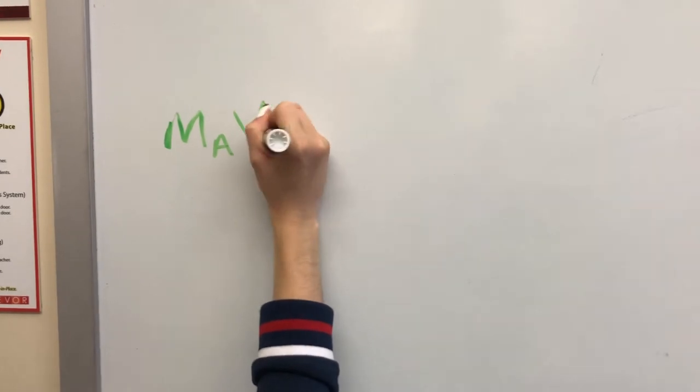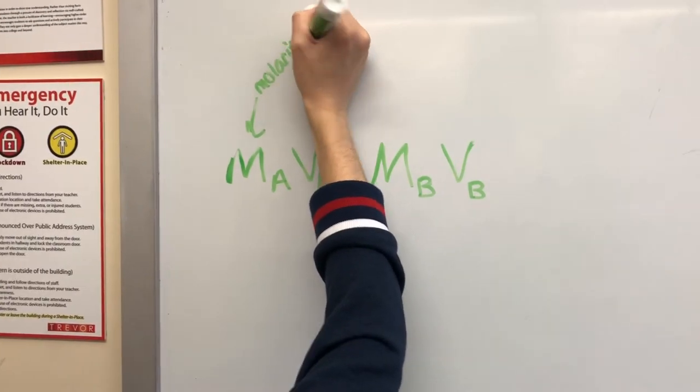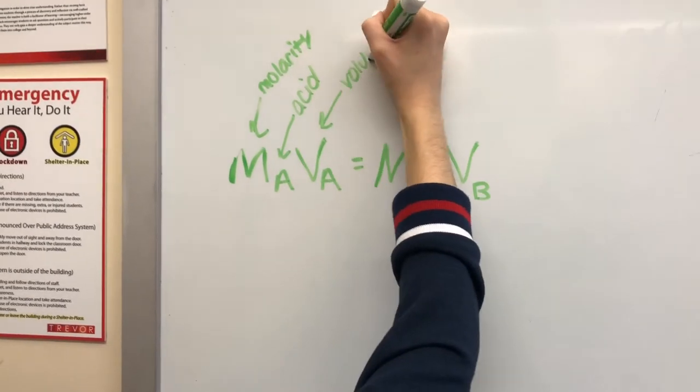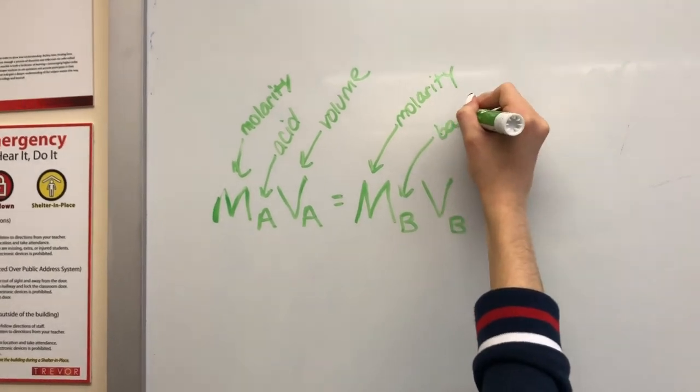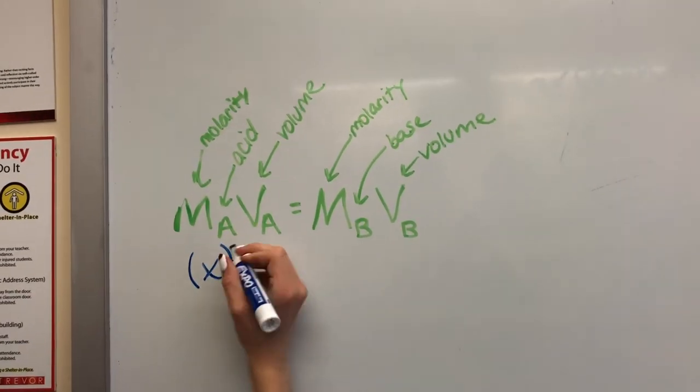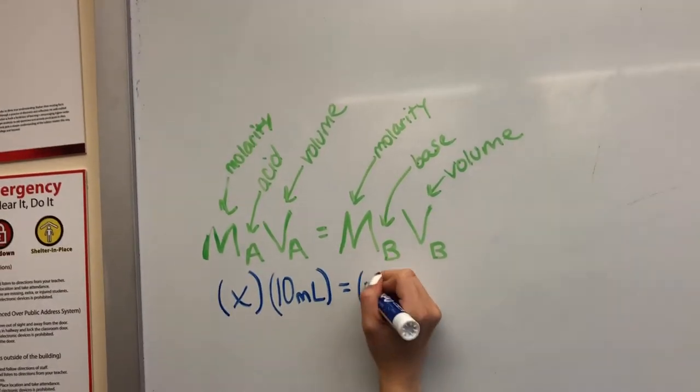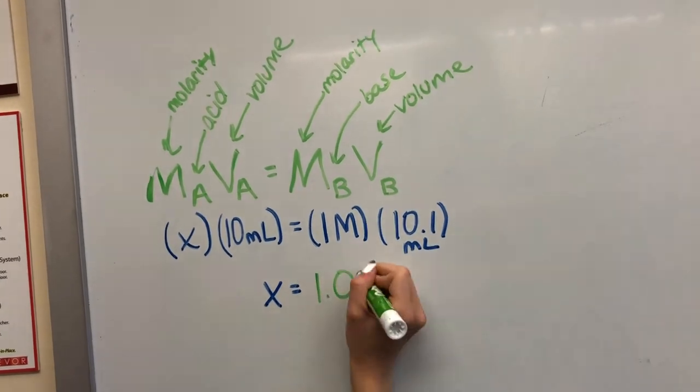It's time to calculate the unknown concentration of the analyte, which in this case is the hydrochloric acid. The formula we will use is MA times VA equals MB times VB, so let's start filling in what we know. We don't know the molarity of the acid, but we do know that the volume of the acid is 10 milliliters. We also know that the molarity of the base is a 1 molar solution and the volume of the base is 10.1 milliliters. After calculating, you will see that the acid is a 1.01 molar solution.